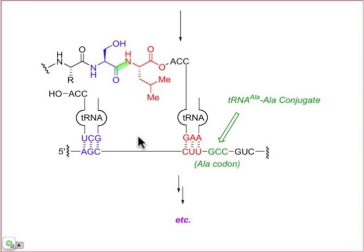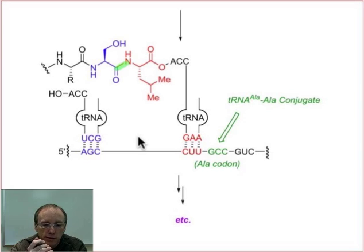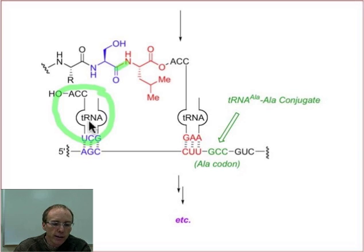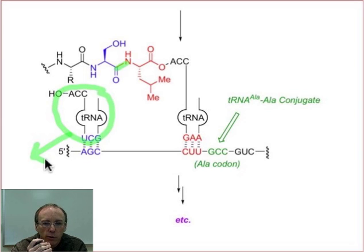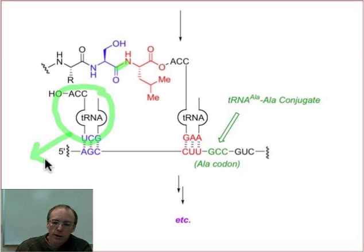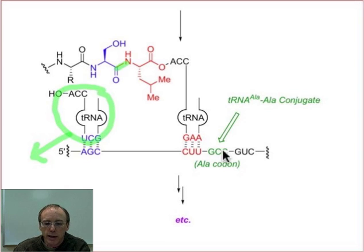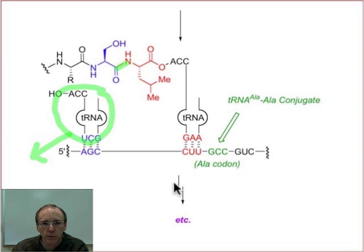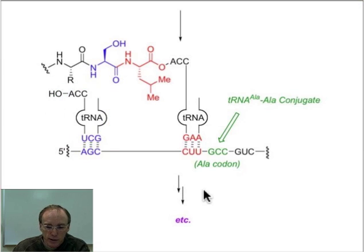That's the process of one iteration of protein biosynthesis. Notice now that the serine transfer RNA is free — it's able to diffuse away to pick up another molecule of serine by the serine synthetase, as we talked about in the previous webcast. Next, an alanine transfer RNA is going to come in and bind. Its amino group will react with this carboxylic ester, a new amide bond will form, and the peptide will continue to grow. That's the way by which templated iterative peptide bond formation is involved in protein biosynthesis.